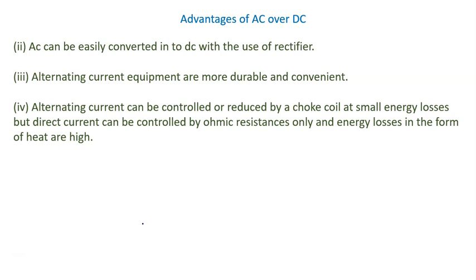AC can be controlled or reduced by a choke coil at small energy loss, but DC can be controlled by ohmic resistance. Whenever there is resistance in the circuit, of course energy loss will be more and heat loss will be more.